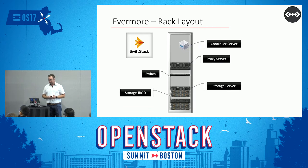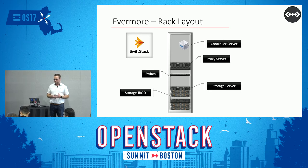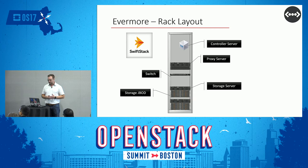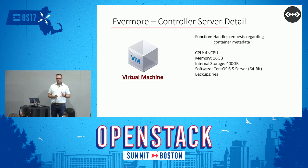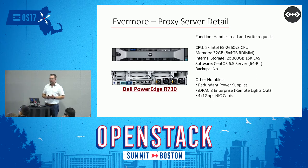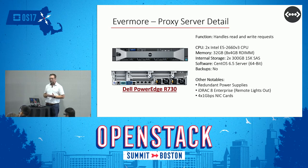In each data center, we design these object storage pods. It's pretty simple: we're running SwiftStack as our software. We have a controller server that handles a lot of the metadata, a proxy server in each site, dedicated network switching, a storage server, and a storage JBOD. The controller is a basic VM running inside our hosted VM infrastructure. The proxy server is a Dell PowerEdge R730 — a pretty basic server that we don't even back up, because if it breaks we just image a new one and get it running.